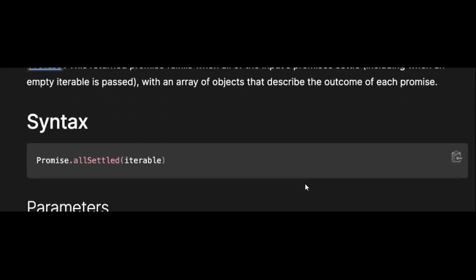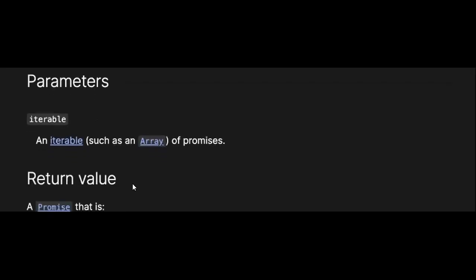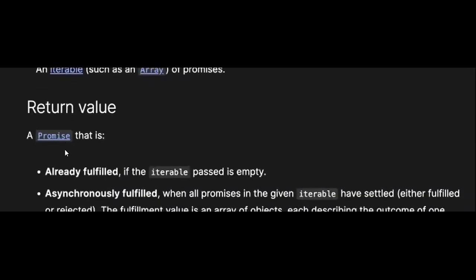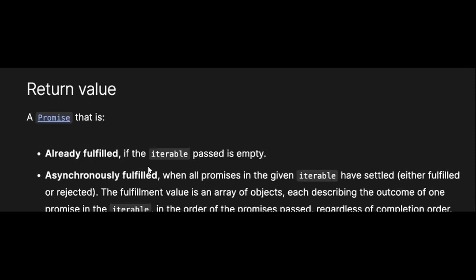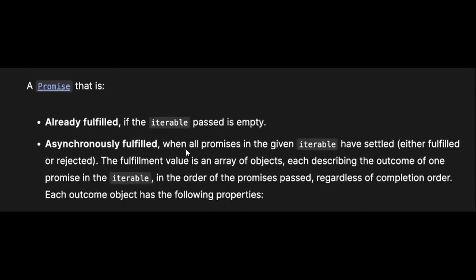The syntax is simple - you use the Promise.allSettled method and pass an iterable which is a list of promises to it. It returns a promise that is already fulfilled if the iterable passed is empty, or asynchronously fulfilled when all promises in the given iterable have settled, either fulfilled or rejected.